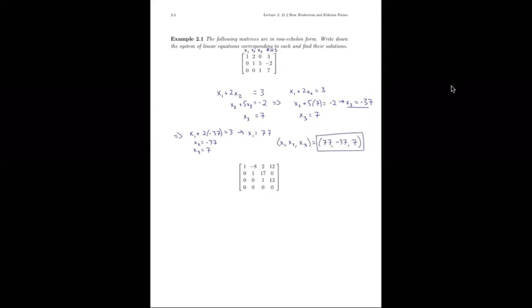This demonstrates that if we're in row echelon form, it's easy to use back substitution. If this had been 2 and 14 instead of 1 and 7 — just a multiple of two on the third row as the book allows — when we solve for x3, we'd first get 2x3 equals 14, and then x3 equals 7. So making pivot positions into leading ones simplifies the process, though it's not strictly necessary.